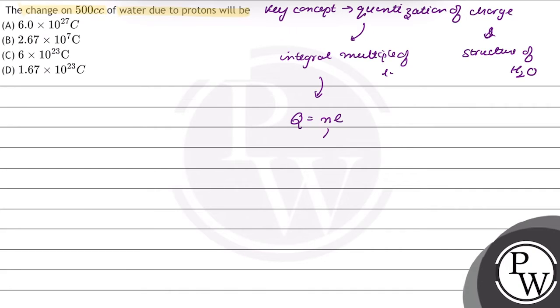Here N is the number of electrons or protons and E is the charge on each electron or proton. E value is 1.6 into 10 to power minus 19 coulomb.